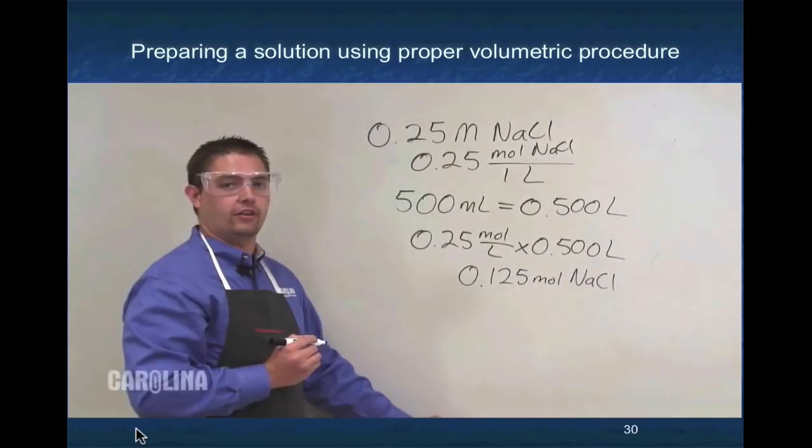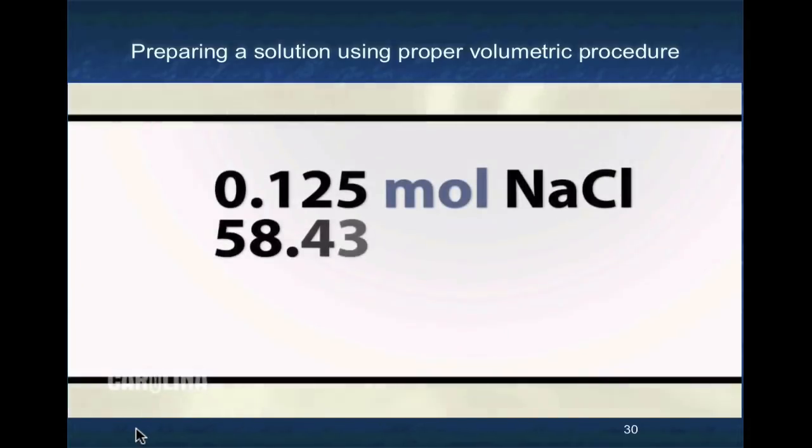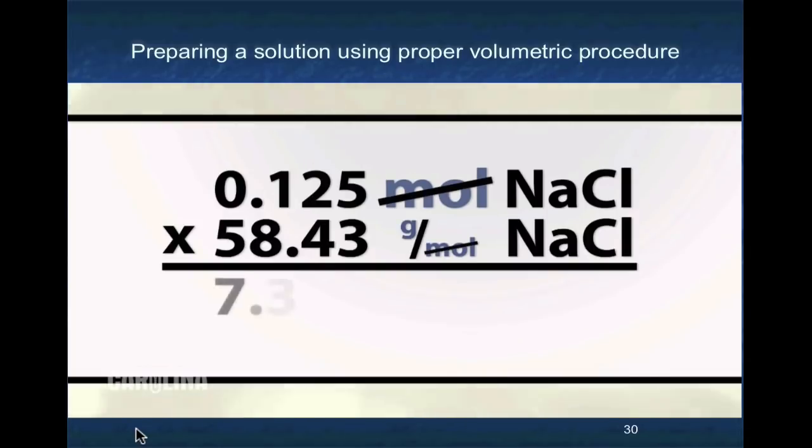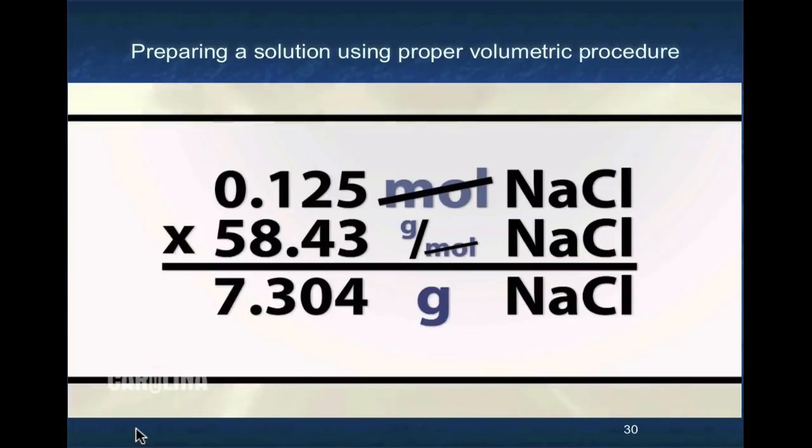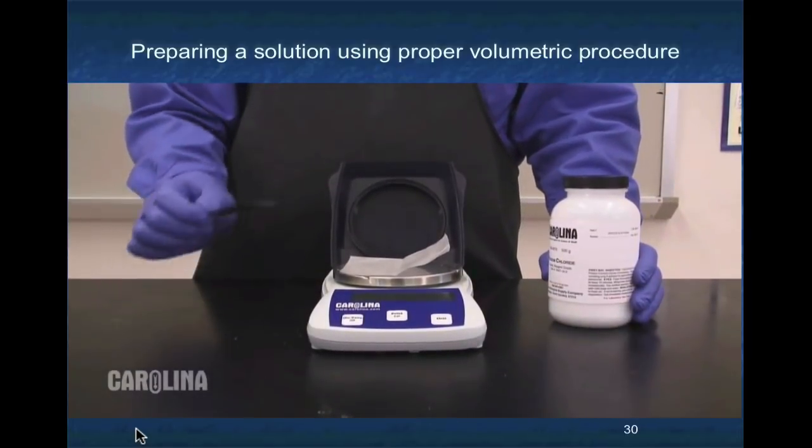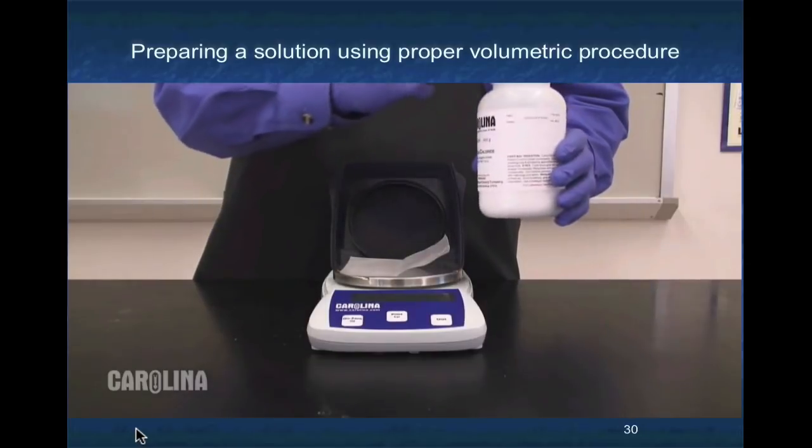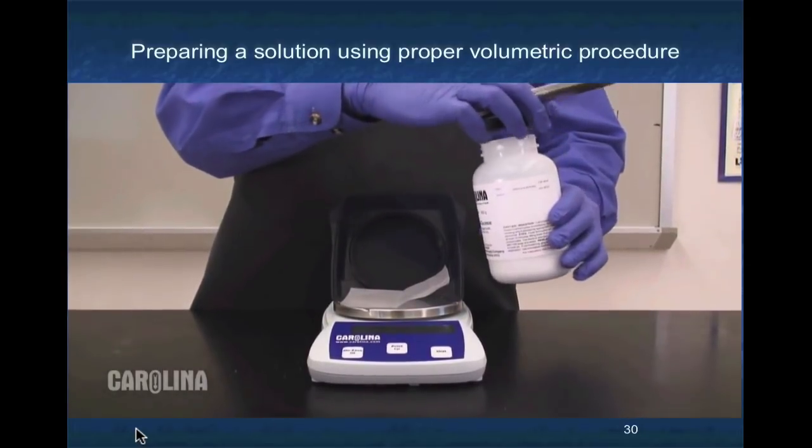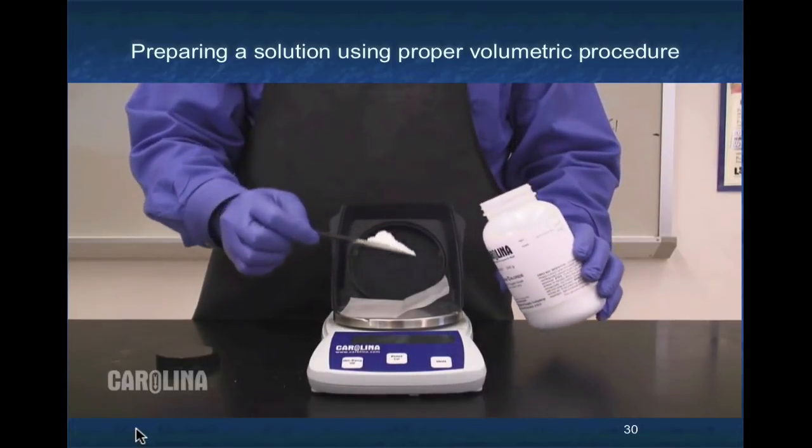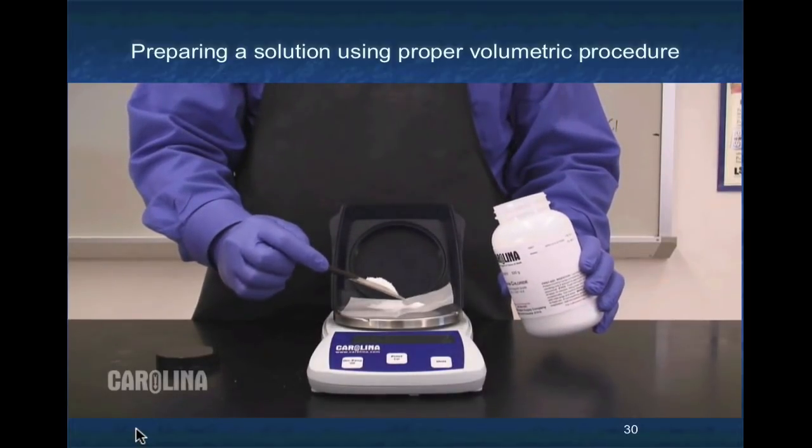From earlier, we can remember that there are 58.43 grams per mole of sodium chloride. We can determine that the exact mass that must be measured out is 7.304 grams of sodium chloride. In lab, obtain some sodium chloride and a clean lab scoop, and using a balance with some weighing paper, measure out as close to 7.304 grams as possible, marking down your exact mass.